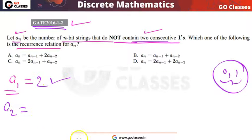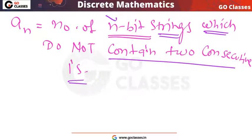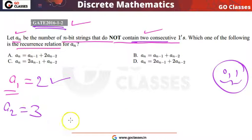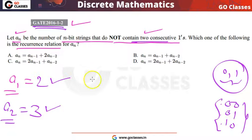What is A2? A2 means the number of two-length bit strings that do not contain consecutive ones. There are three such strings of length two which do not contain consecutive ones. So A2 = 3.